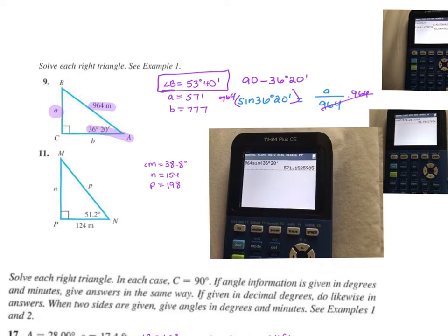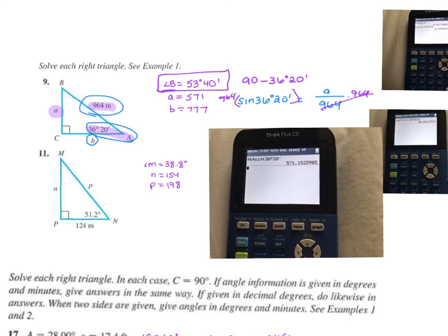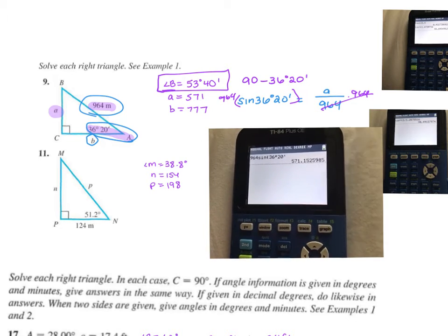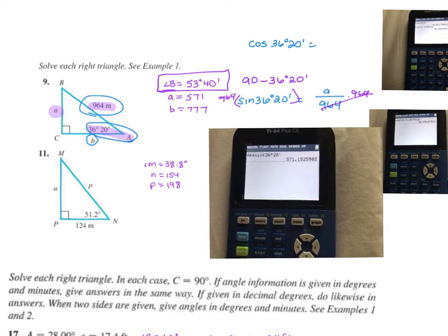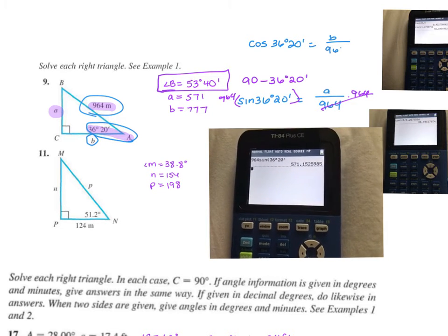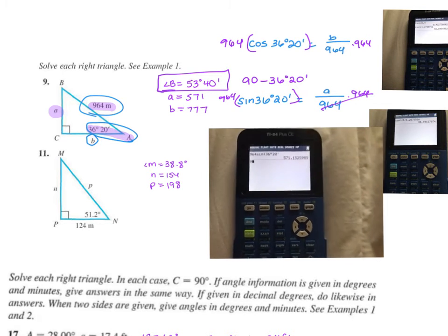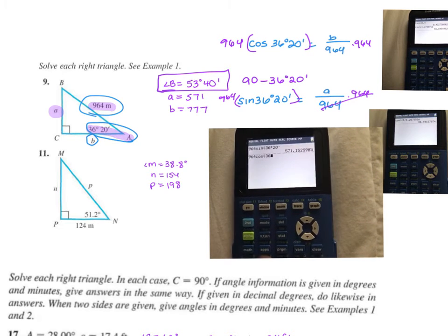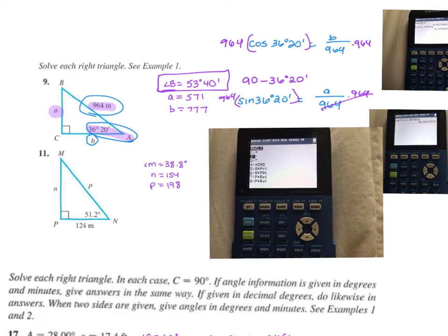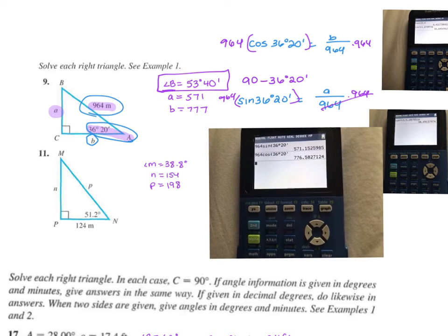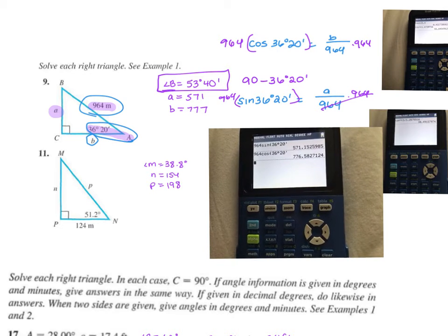For B, I'm now using, again, still what they gave me. So I'd get the angle A, side B is adjacent, and the hypotenuse is 964. Now I'm doing cosine. Cosine of 36 degrees and 20 minutes equals adjacent, which is B, over 964. I want to multiply both sides by that 964. In the calculator, I'm going to type in 964 times the cosine of 36 degrees and 20 minutes. And I get that 576.5, which in here is rounded to 777.